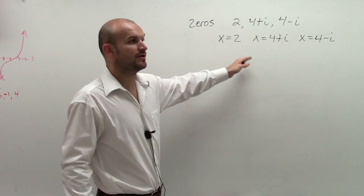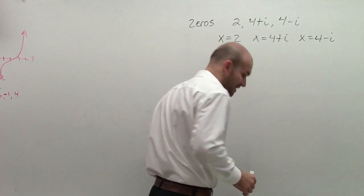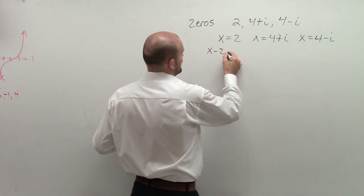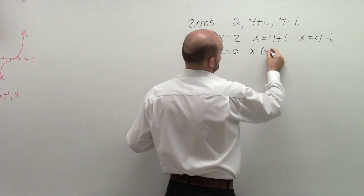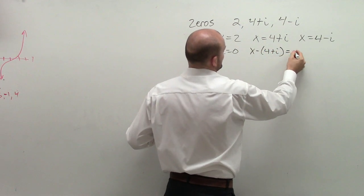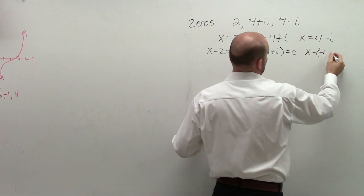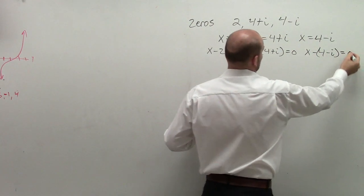Then, before that, we wrote them as 0. You could write them now as the zero product property. So I'm going to set them each equal to 0. So x minus 2 equals 0, x minus 4 plus i equals 0, and x minus 4 minus i equals 0.